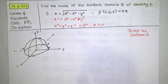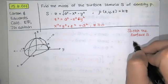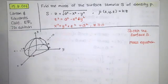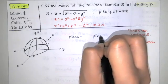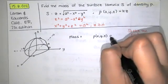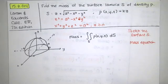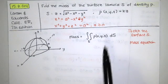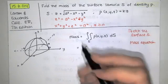We want to find the mass of the surface. The mass is given by the density — mass per unit area — times area. Since we're talking about a surface area, this is a ds, making it a double integral over s. For a surface integral like this, we write everything in terms of x, y, and z. We know rho of x, y, z is just k times z.